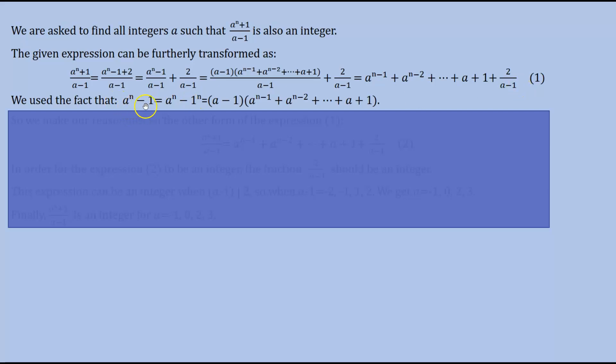We use the factorization that a^n - 1 = (a-1)(a^(n-1) + a^(n-2) + ... + a + 1).